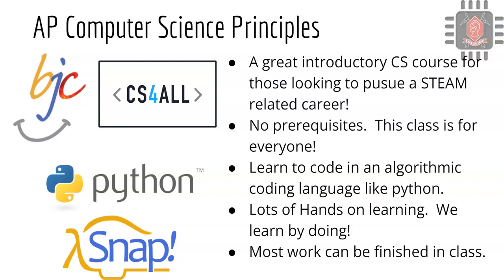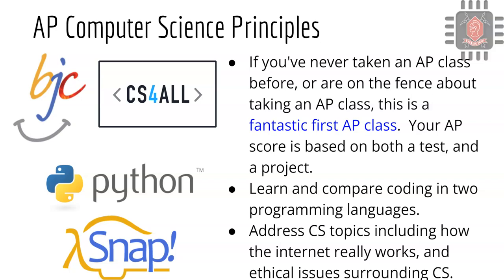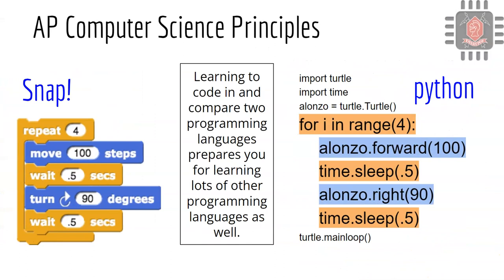There's lots of hands-on learning in AP Computer Science Principles, and most of the work can be finished in class. If you've never taken an AP class before, AP Computer Science Principles is a fantastic first AP class. Your AP score is based on both a test and a project. You'll also learn to compare coding in two different programming languages — Snap and Python — which is a great way to learn more languages after the class. We also talk about how the internet works and ethical issues surrounding computer science.